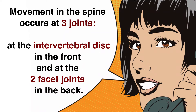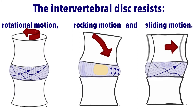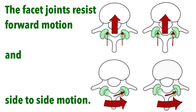Recall that the spine can be broken down into its smallest functional unit, which is a three-joint complex, or two vertebra lying on top of each other. The front portion of the unit consists of two vertebral bodies, which are joined by a special kind of joint called an intervertebral disc. The back portion of the functional unit consists of two facet joints, which connect two adjacent vertebra from top to bottom.